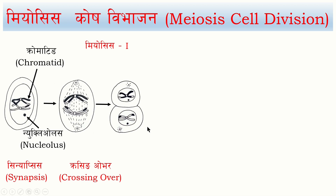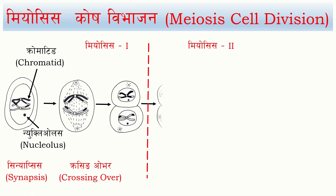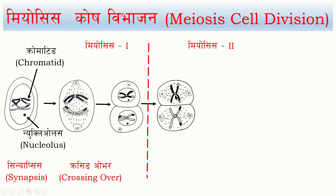This is called Meiosis I. Meiosis I is also known as the first division, resulting in two different cells. The next stage, Meiosis II, is going to start. Meiosis II results in further division and then the products of Meiosis II are going to be separated.